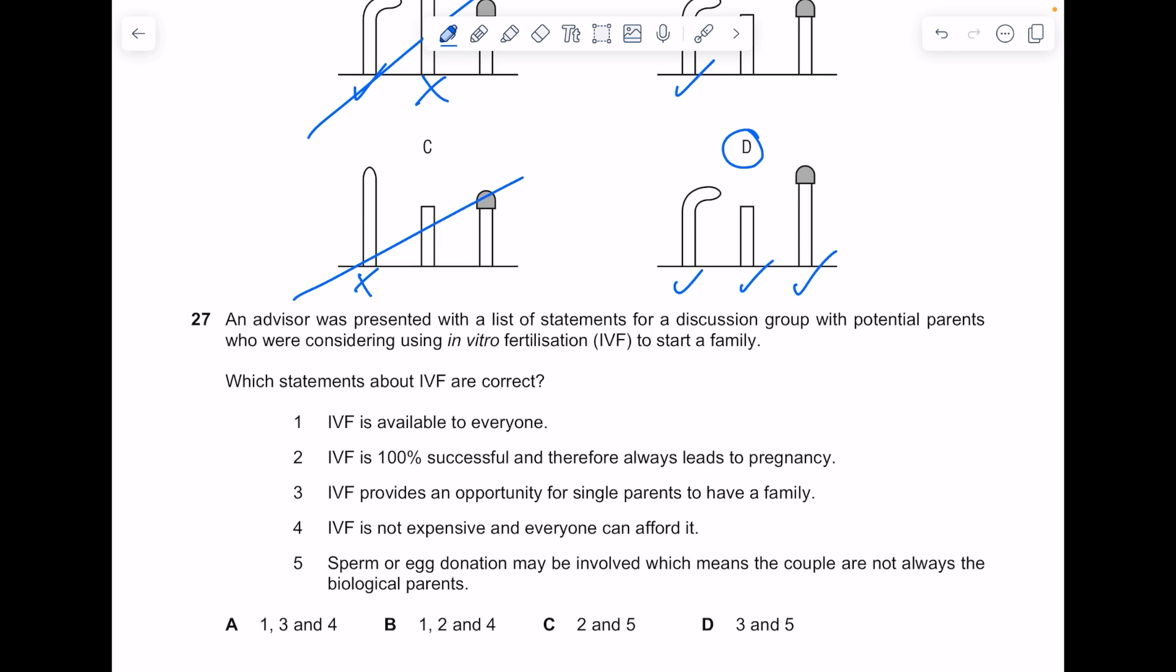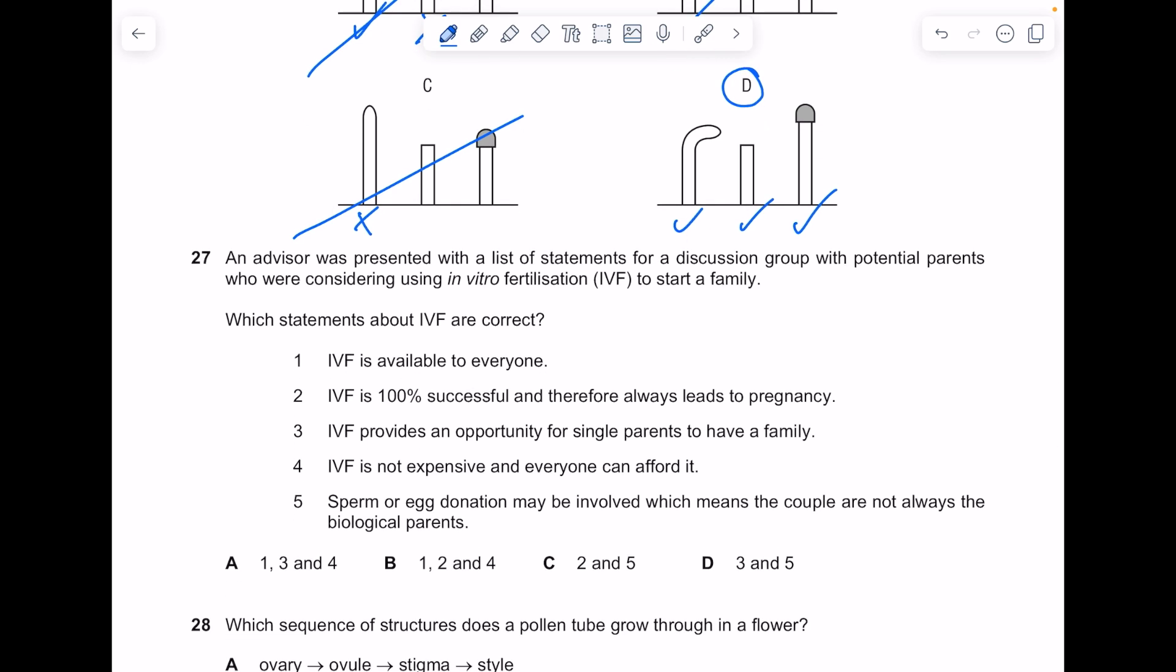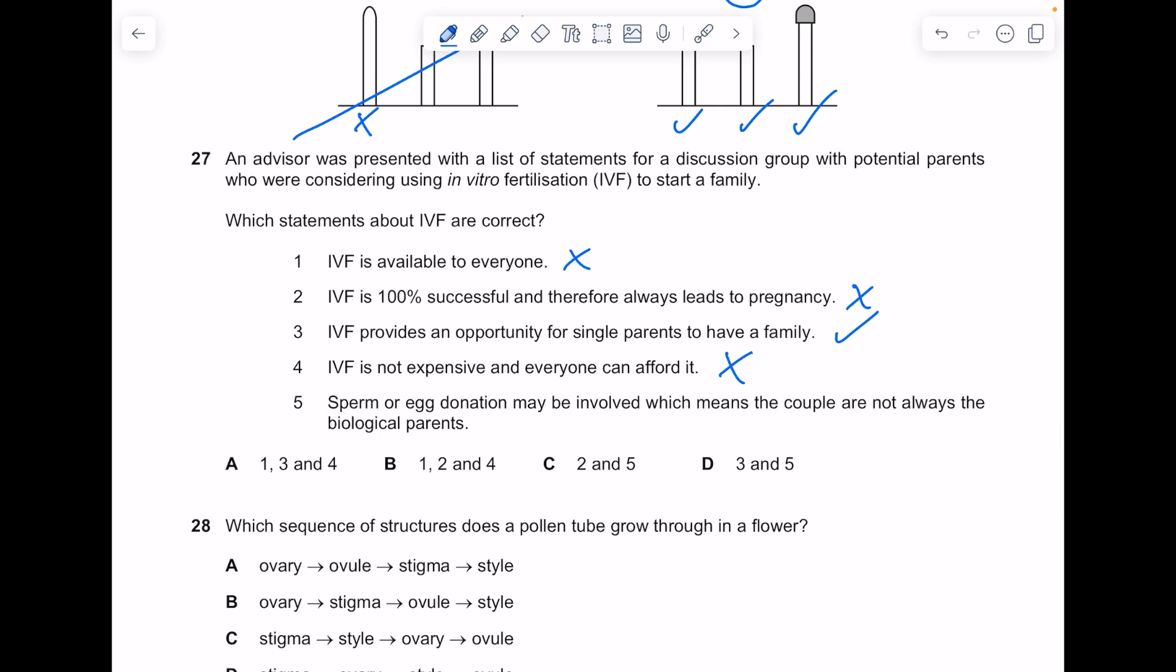An advisor was presented with a list of statements for a discussion group with potential parents considering using IVF to start a family. Which statements about IVF are correct? In vitro fertilization is about taking sperm and egg and fertilizing in a petri dish to increase the chance of having a baby. IVF is not available to everyone, it's not 100% successful. IVF provides an opportunity for single parents to have a family - yes. It is expensive. Sperm or egg donation may be involved which means the couple are not always the biological parents - true. The answer here is D.